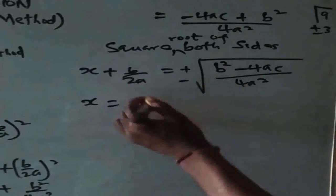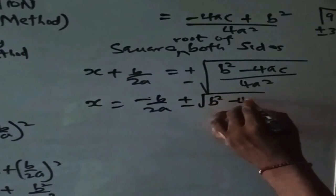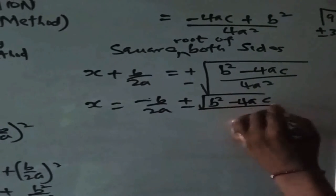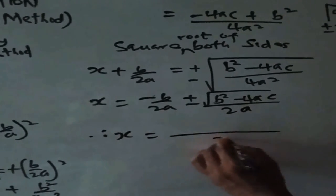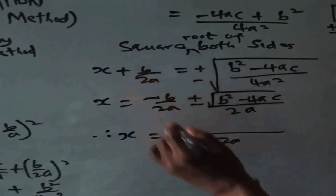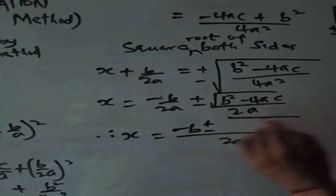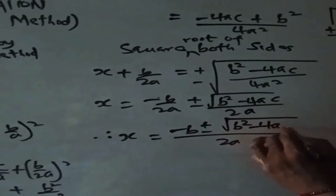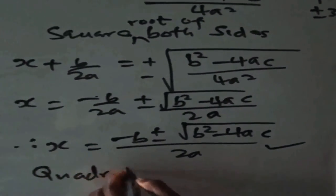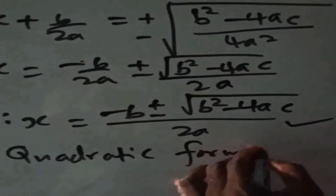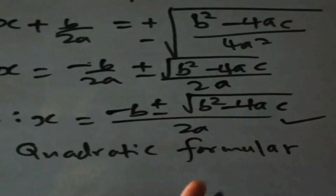So x equals minus b over 2a plus or minus the square root of b squared minus 4ac over — the square root of 4 is 2, the square root of a squared is a — giving 2a. Taking the LCM as 2a, x equals minus b plus or minus the square root of b squared minus 4ac, all over 2a. This is what we call the quadratic formula. We can use it to solve quadratic equations just as we can use the completing the square method.